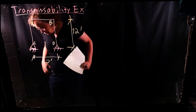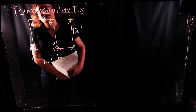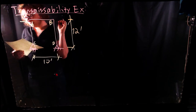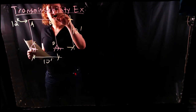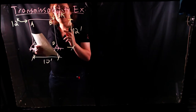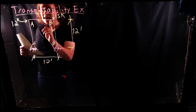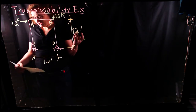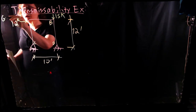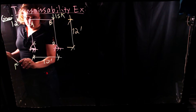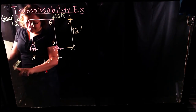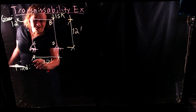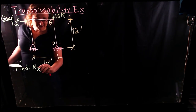Now I'm going to apply a few external loads to the structure — just simple vertical and horizontal loads. Let's apply a 12 kip horizontal load and a 15 kip vertical load. So I have a downward load of 15 kips on joint B and a horizontal load of 12 kips on joint A. All of this is given. And what I want to find are all the reactions on this frame.